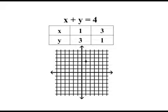Now, we will plot a point with ordered pair 1, 3. This is 1, 3. This is 3, 1. If we join the two points, we will get a line. So, this line represents a graph of the equation x plus y equal to 4.